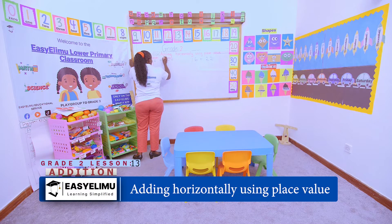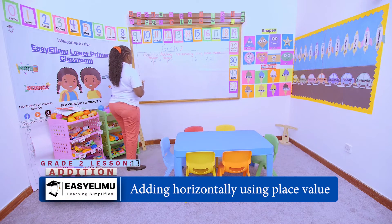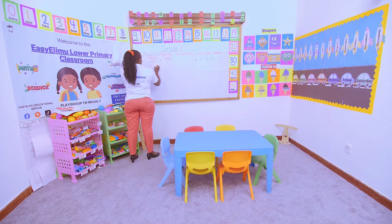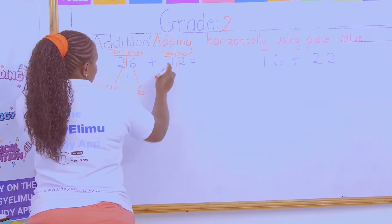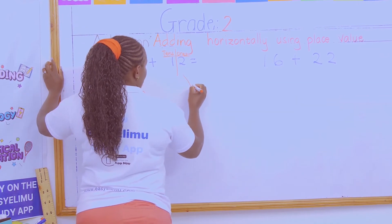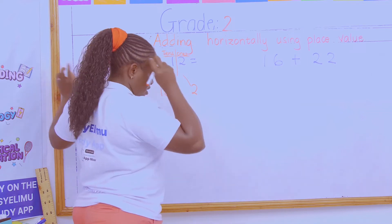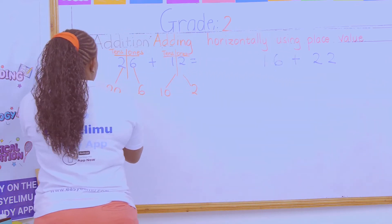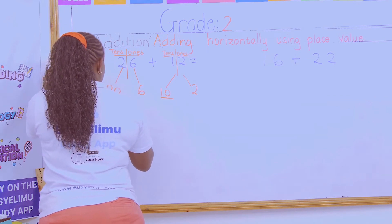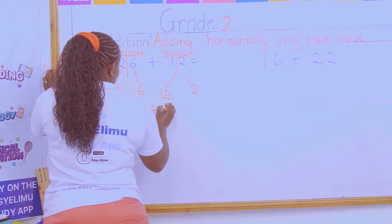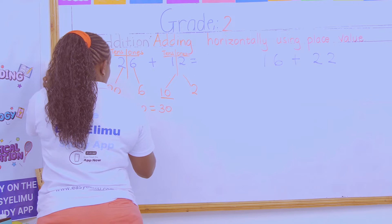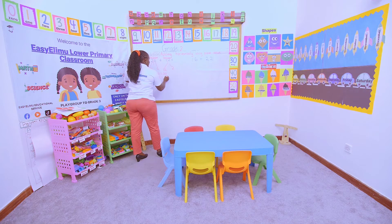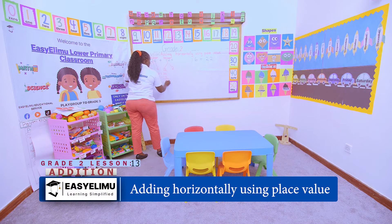We have tens and ones. Two tens equals 20, and six ones is just 6. Then two ones is 2, and one ten is 10. So we add the tens together: 20 plus 10 equals 30. Then for the ones: 6 plus 2 equals 8. So the answer is 38.